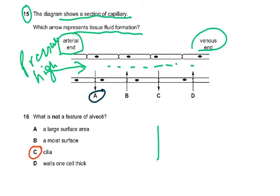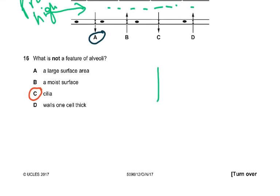Question 16: what is NOT a feature of alveoli? Alveoli do not have any cilia — that is the answer. The other options — large surface area, moist surface, and walls one cell thick — are all genuine features of alveoli. The key word 'not' in the question is what you had to identify carefully.